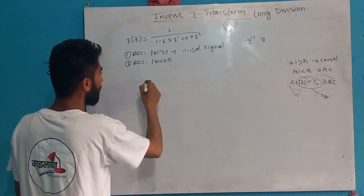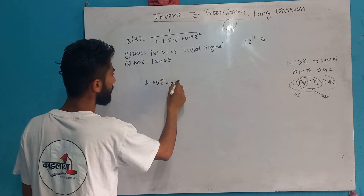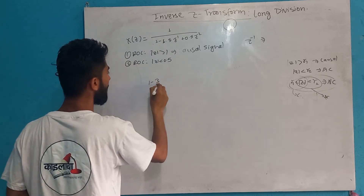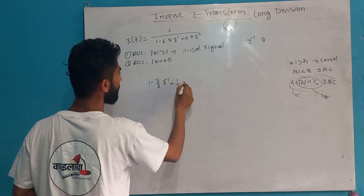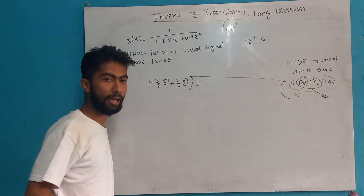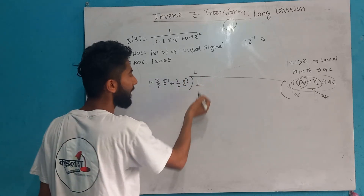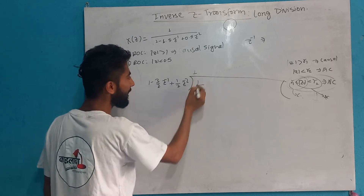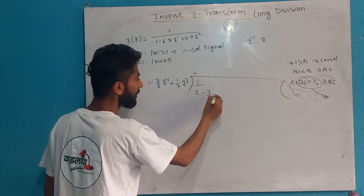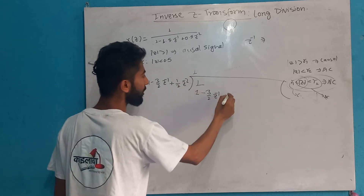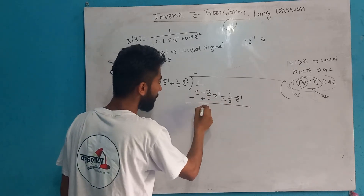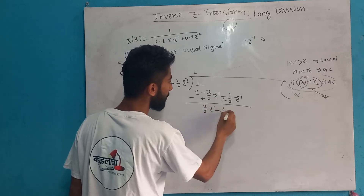So let's do this. We have: 1 minus 1.5 z-inverse plus 0.5 z to the power minus 2, which equals 1 minus 3/2 z-inverse plus 1/2 z to the power minus 2. So let's divide — 1 divided by this gives 1, and 1 multiplied by negative 3/2 z-inverse, and plus 1/2 z to the power minus 2. So 1 cancels, leaving 3/2 z-inverse minus 1/2 z to the power minus 2.